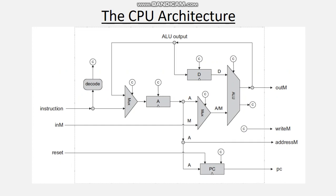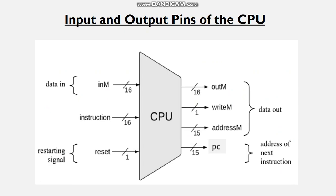Now coming to the first step, that is to derive the API for the CPU. The API basically specifies the chip name, the input and output pins, and the function of the CPU. Let's start with an abstraction of this chip by having the logic gates in the diagram, so we can identify the input and output pins. We can clearly see that there are three inputs coming into the CPU: the inM input, which is the value of the currently selected data memory register; the instruction input, which is the value of the selected instruction memory register, which can be either an A instruction or a C instruction.